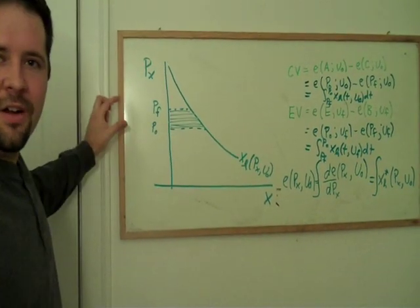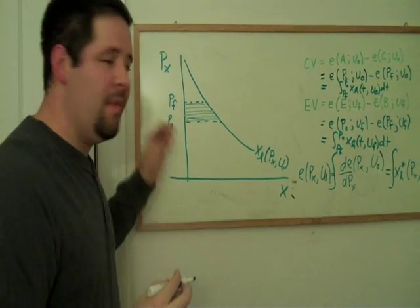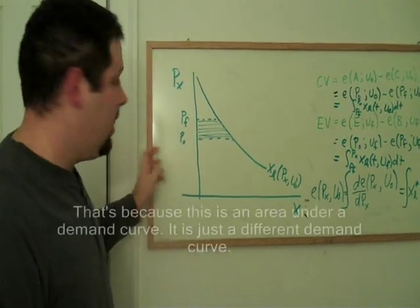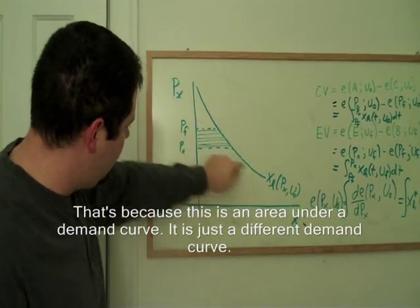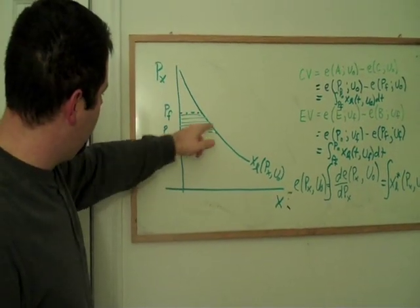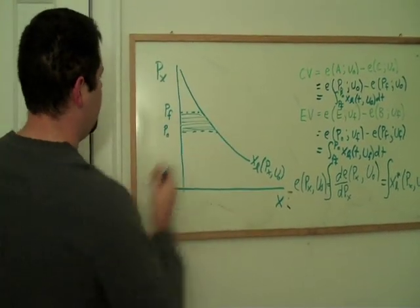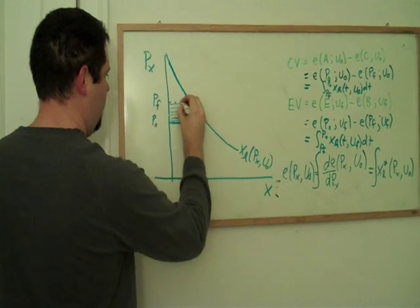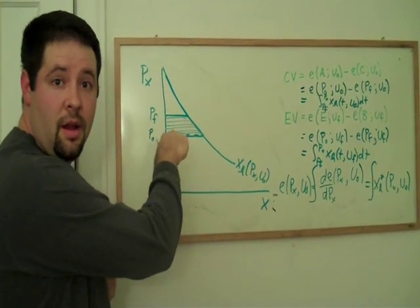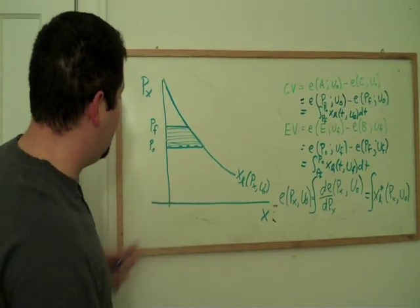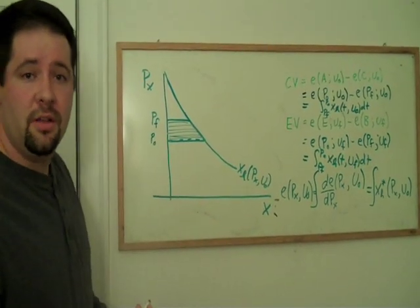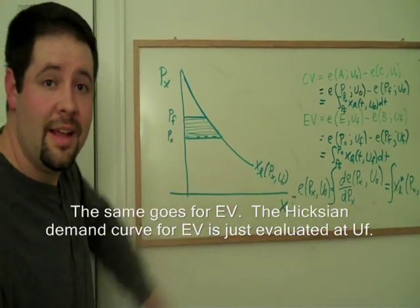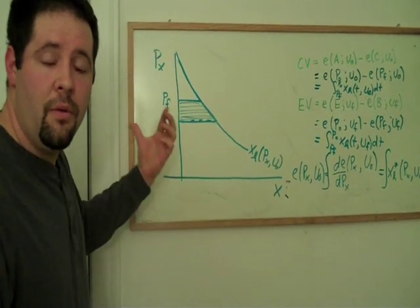Now this should start looking very similar to something that you may have seen in your introductory economics classes. This might remind you very much like an area under a demand curve. Especially if we thought about this whole area. And then we thought, well, what's the difference between, say, this amount of welfare and that amount of welfare. This is going to be that little trapezoid there. And we get these welfare triangles. It turns out that this is what compensating variation looks like. It looks like a change in the area under our Hicksian demand curve. And that's actually a really useful representation.